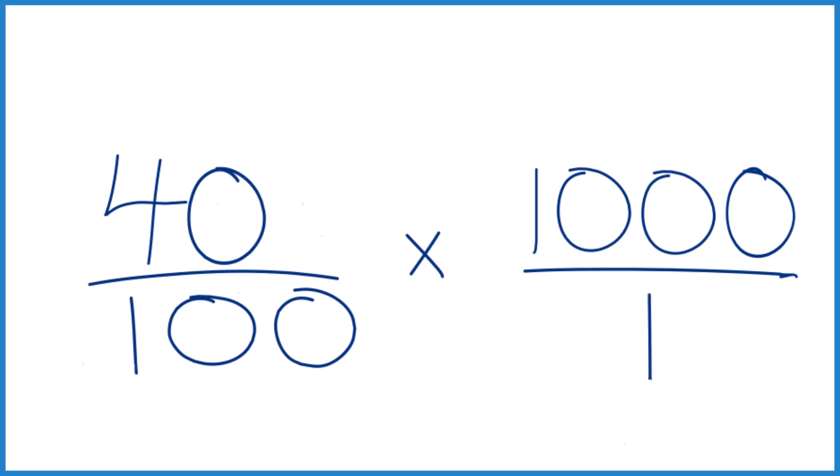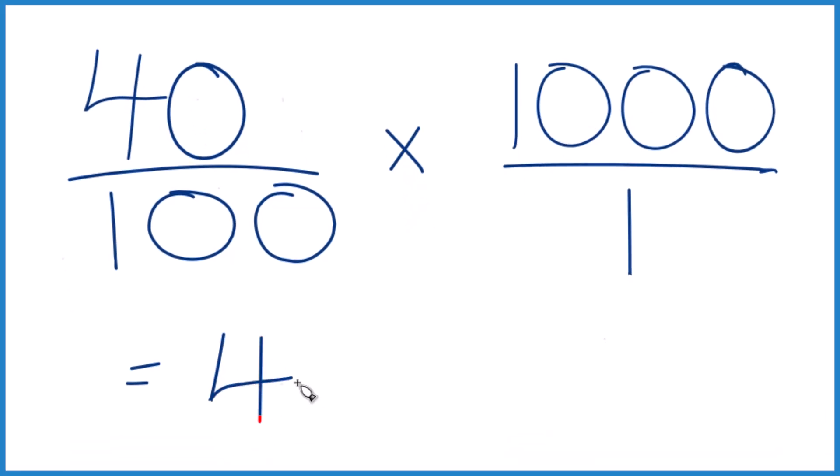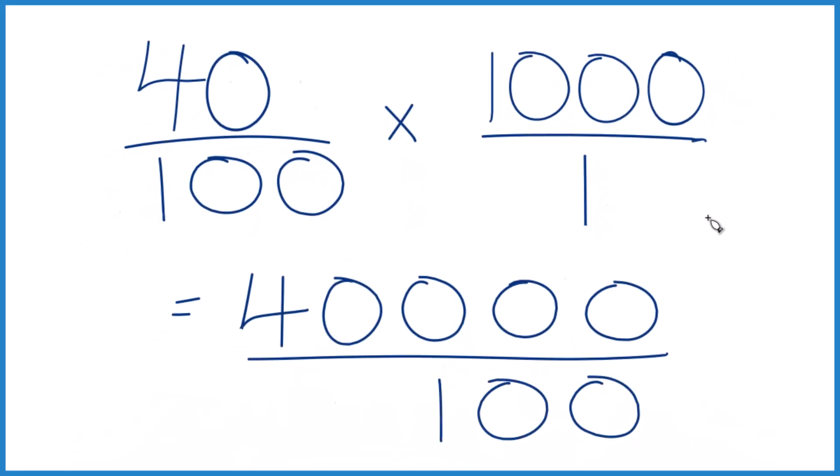40 times 1,000, that equals 40,000. 100 times 1, that's 100. So if we divide 40,000 by 100, we get 400, just like we found before.